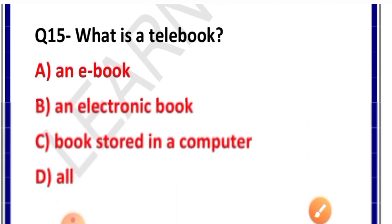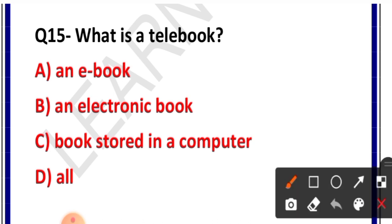Question number 15: What is a tally book? Options: A. An e-book, B. An electronic book, C. Books stored in a computer, D. All. Correct answer is option D — all. A tally book can be called an e-book, an electronic book, or a book stored in a computer. Computer ke andar bhi store ki ja sakti hai e-book, jise hum tally book kehte hain.